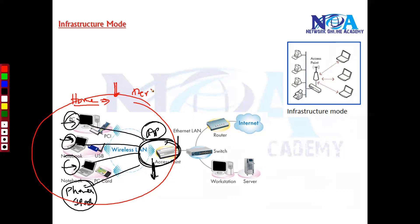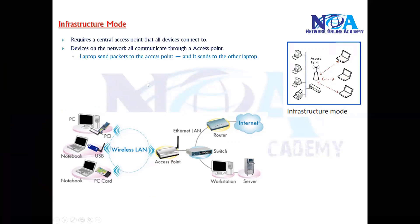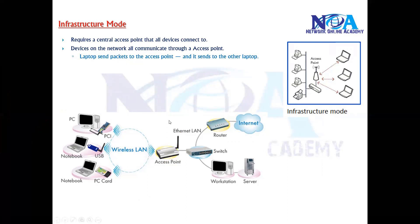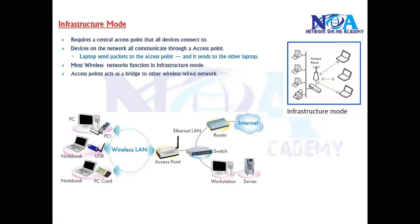It is a one-time setup. You need a centralized access point from which all wireless devices connect. Laptops send packets to the access point, and the access point forwards them to other devices — communication goes through the access point. Most wireless networks, including home networks, use infrastructure mode.